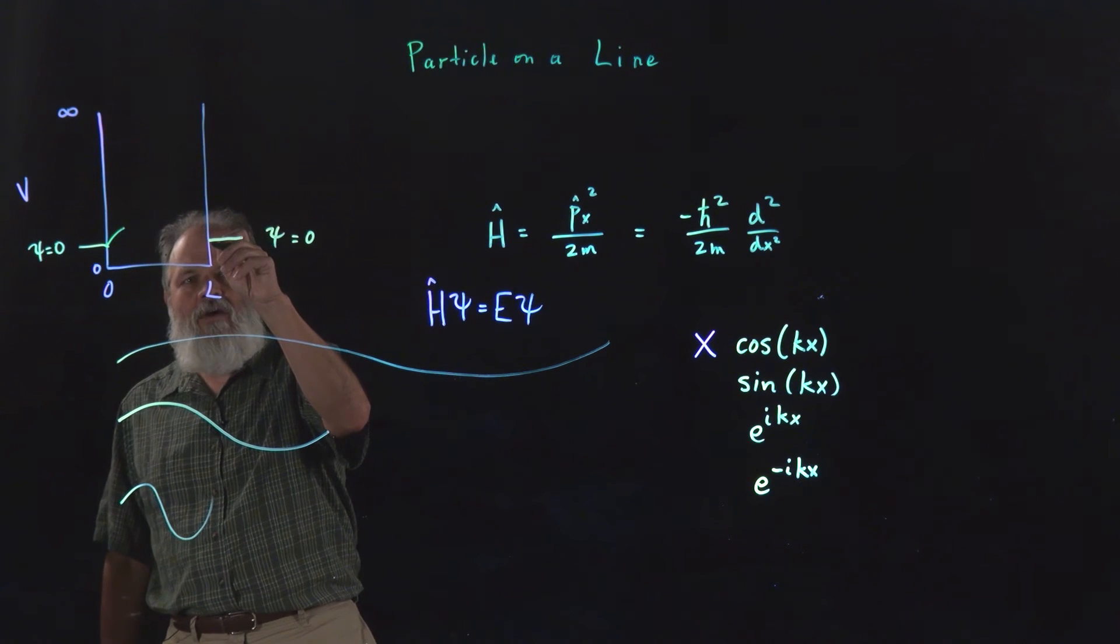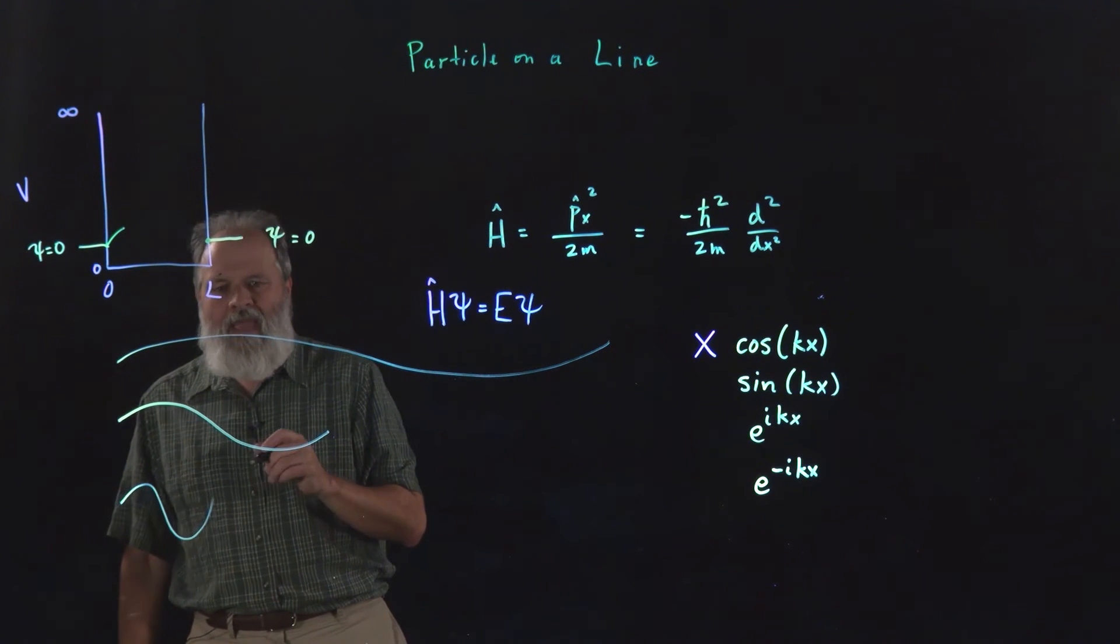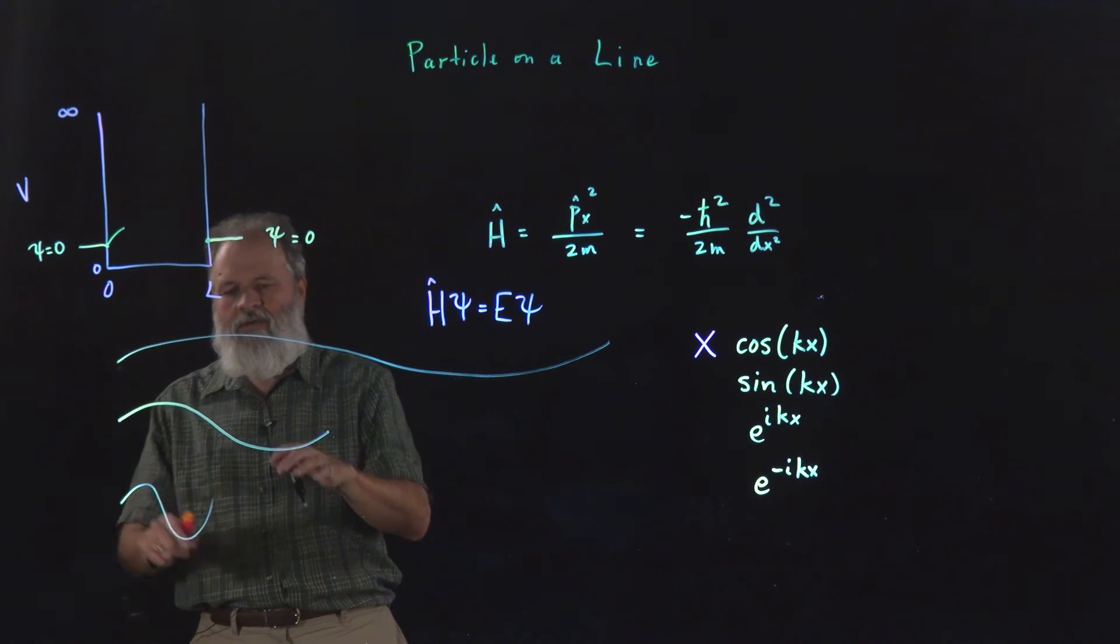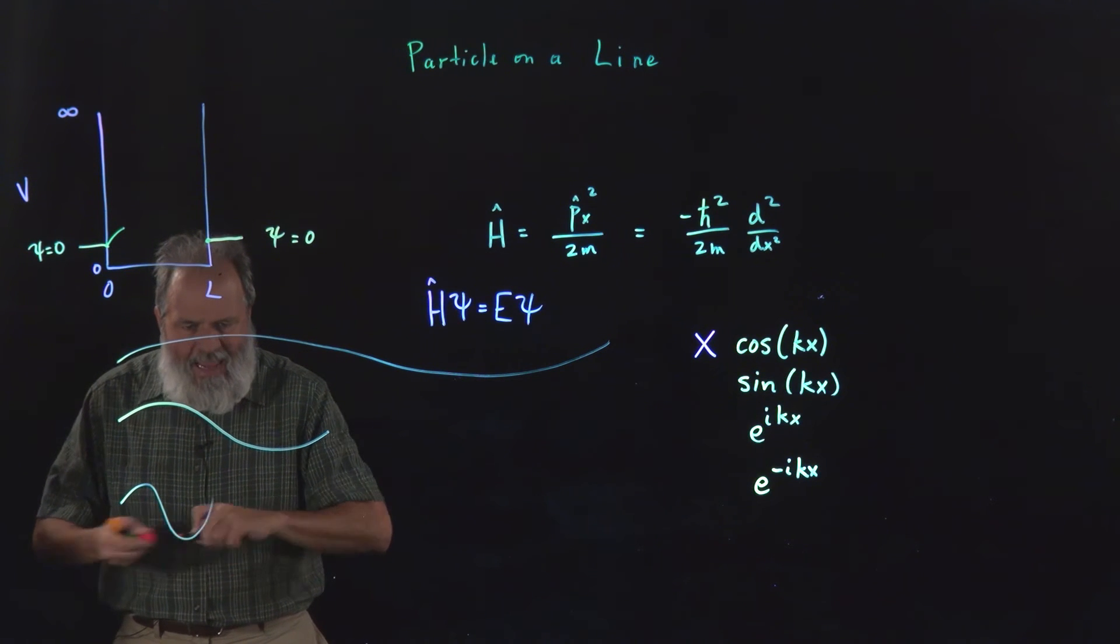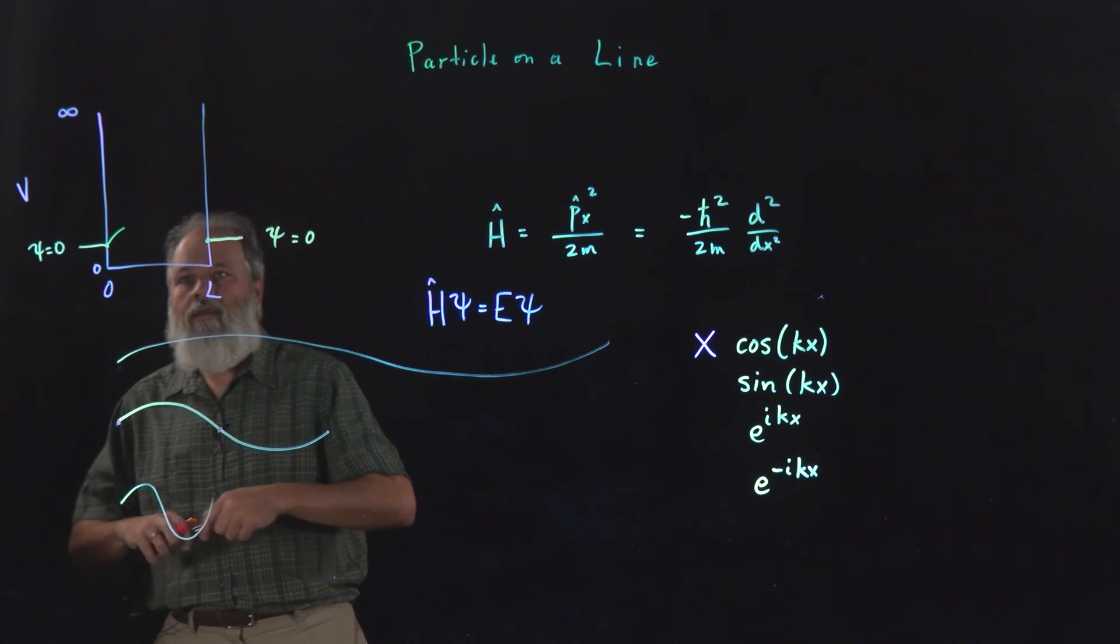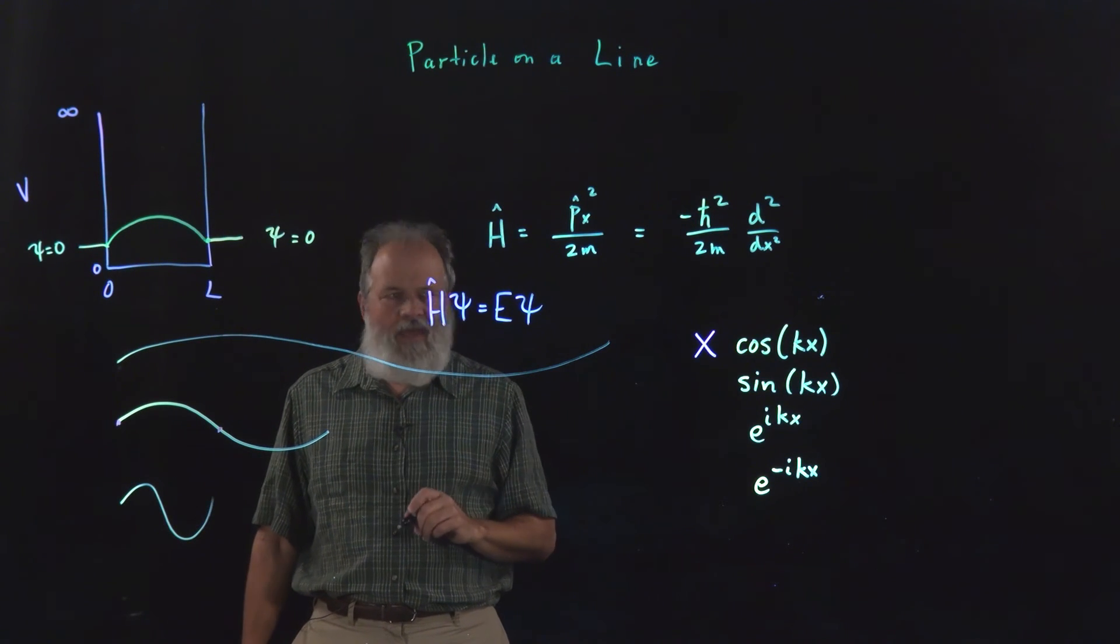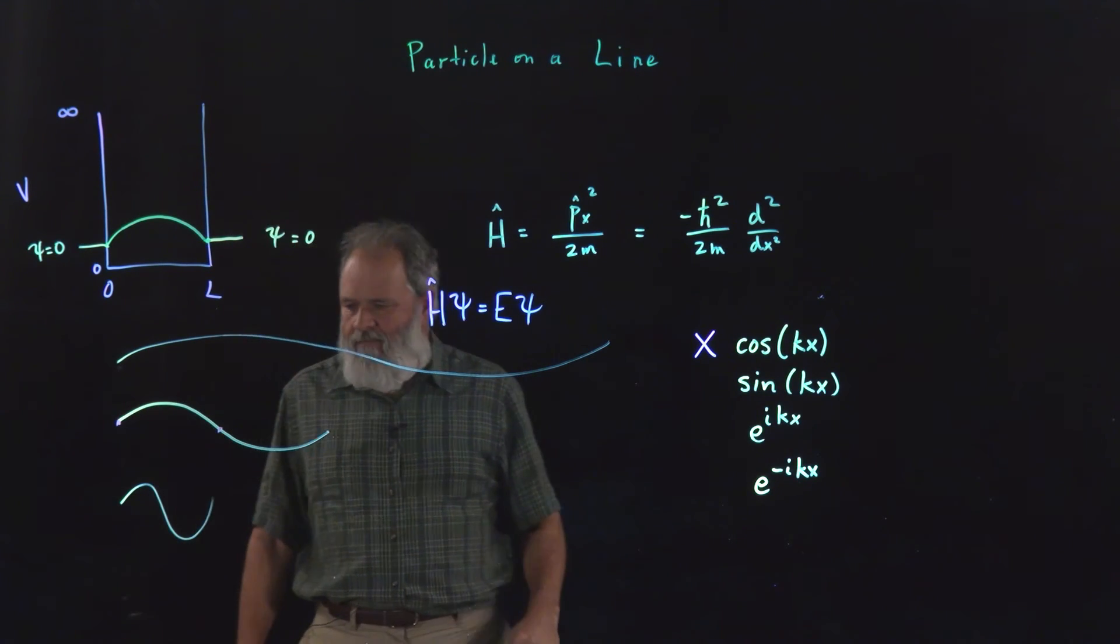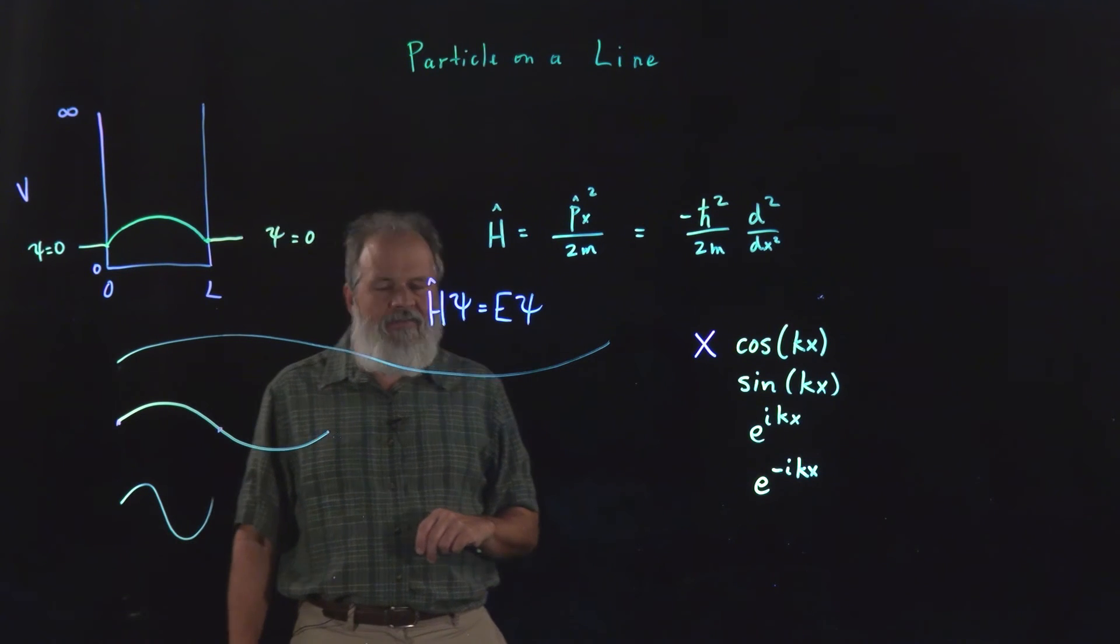So the question becomes, how can we make the sine wave match over here? Well, the first one that matches over here, this can't match because it's still going up. But this one where the sine wave, where half of the wave goes from zero to L, that will fit in this box. So that tells us something about k because if you change k, you're going to change the wave number of the wave. So the lowest energy solution to this problem is where it's a half of a sine wave.